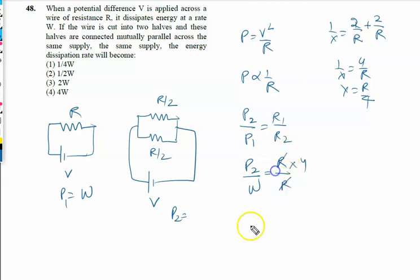Since R2 equals R/4, the factor of 4 comes here and R cancels. So the value of P2 is 4W. The right answer to this problem is option 4, which is 4W.